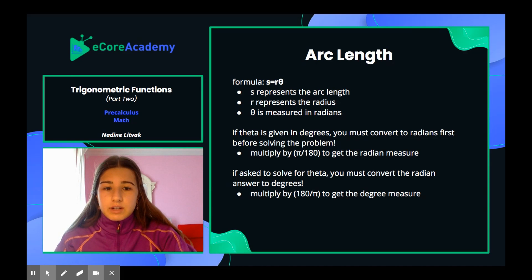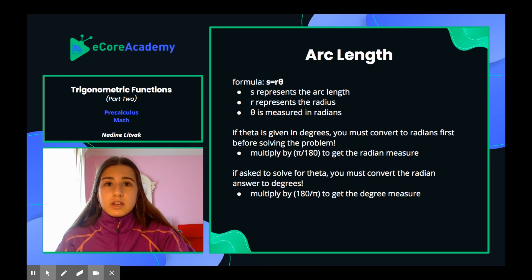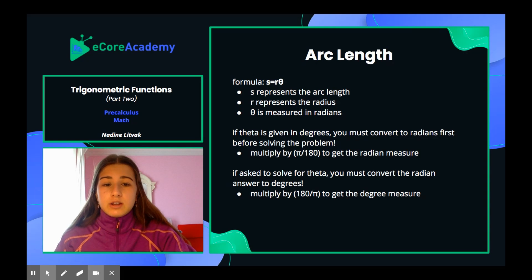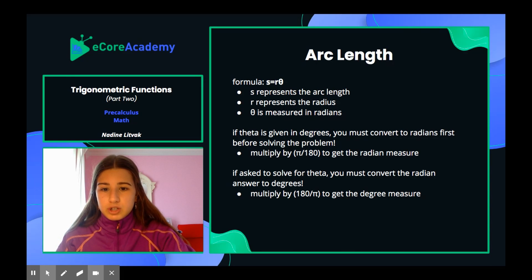If theta is given in degrees, you must convert to radians first before solving the problem. In order to do this, you multiply by pi over 180 to get the radian measure. For example, if you have 45 degrees, you would do 45 times pi over 180, and that will get you the radian measure.